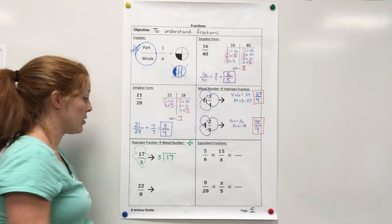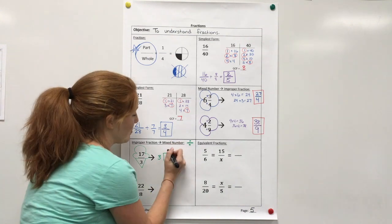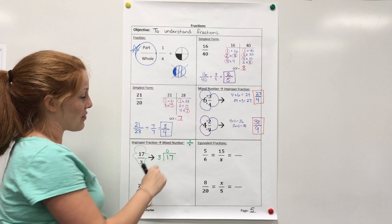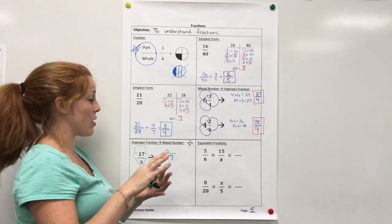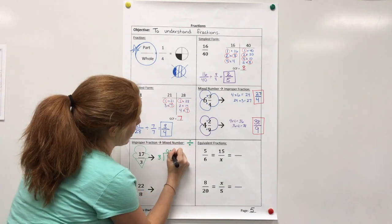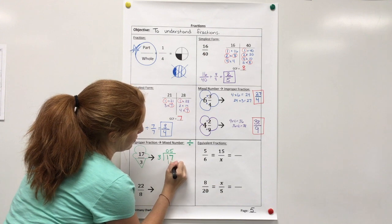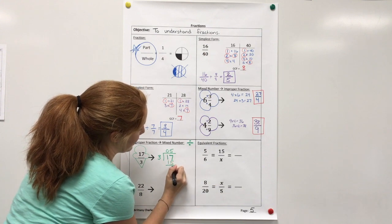So 17 will go here, and then the 3 goes on the outside. And now I'm going to divide. 3 does not go into 1, so put a 0. 3 does go into 17, 3, 6, 9, 12, 15, so 5 times I subtract.